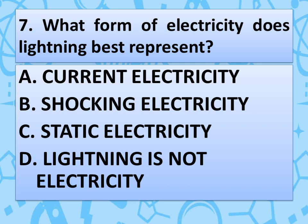Our next question is: What form of electricity does lightning best represent? Read the options and give your answer in the comment box. The correct answer is option C — static electricity.